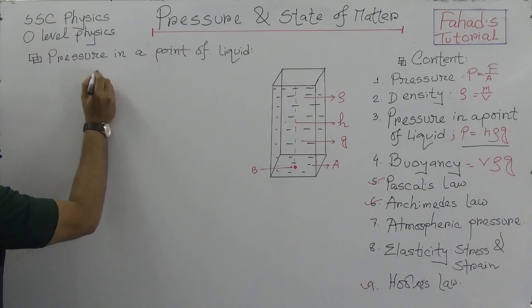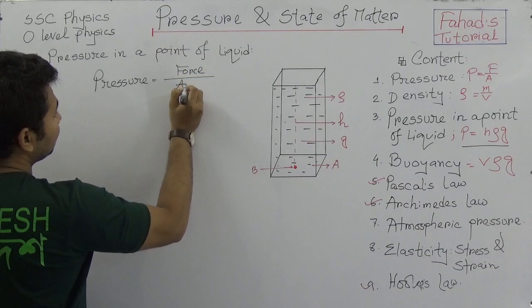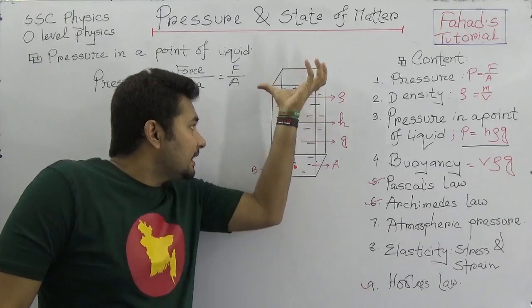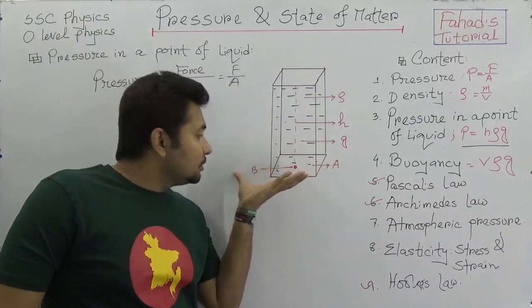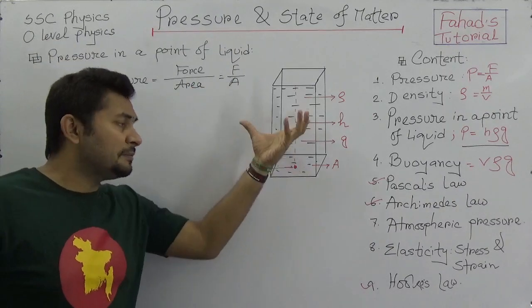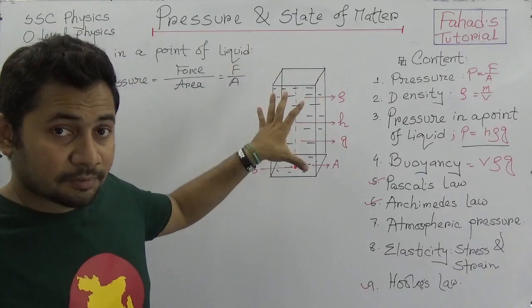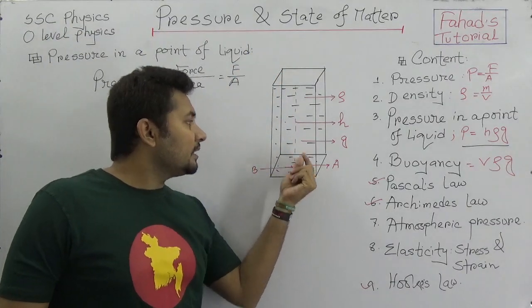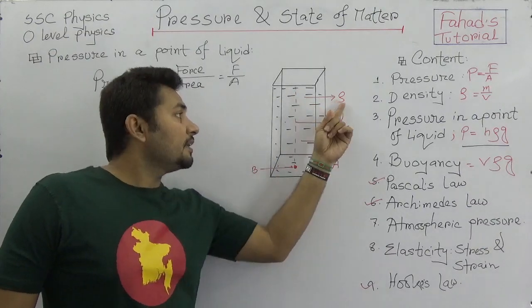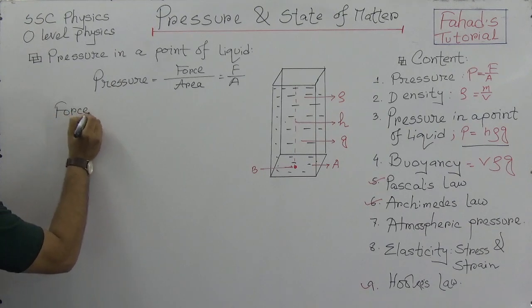From our previous knowledge, we know that pressure equals force upon area — P = F/A. That means the amount of force acting vertically on a unit area is called pressure. Here we know the area of the vessel, and we are imagining some water in this vessel. We have the area A, the acceleration due to gravity G, and the height h down to the bottom point.